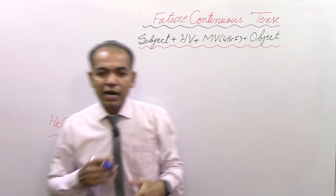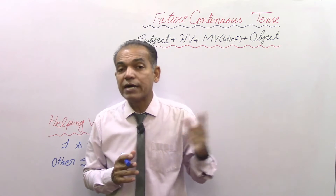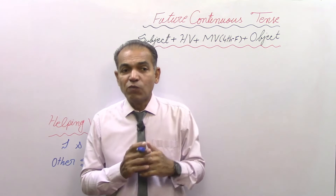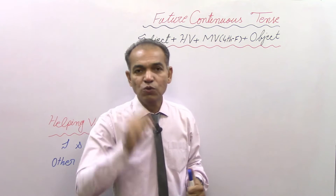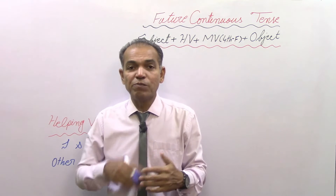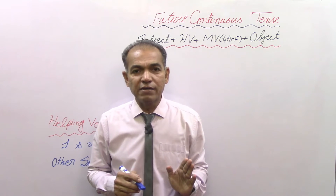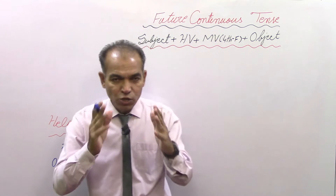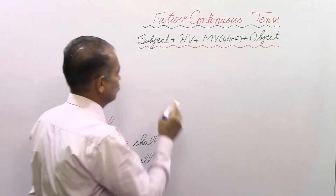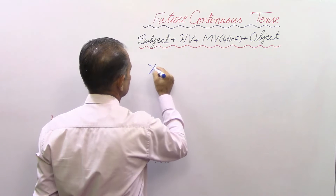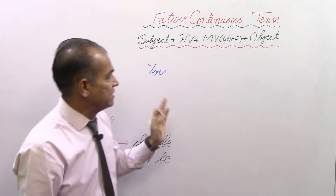Now let's apply the formula. I am talking about a situation in future. What I am talking about will be the subject of my sentence. Right now you are watching video, learning English, paying attention — I want to say something about you, so 'you' is the subject of my sentence. So in the subject position, we write: you.